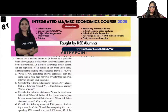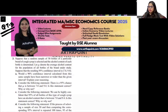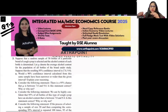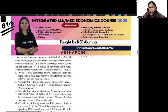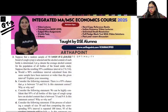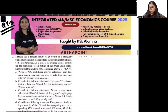This is question 7.3 of chapter 7. Suppose that a random sample of 50 bottles of a particular brand of cough syrup is selected and the alcohol content of each bottle is determined. Let mu denote the average alcohol content for the population of all bottles of the brand under study — so mu is the mean alcohol content of the population.